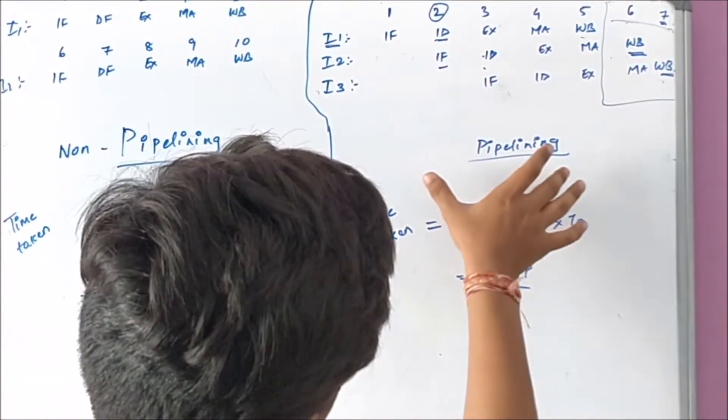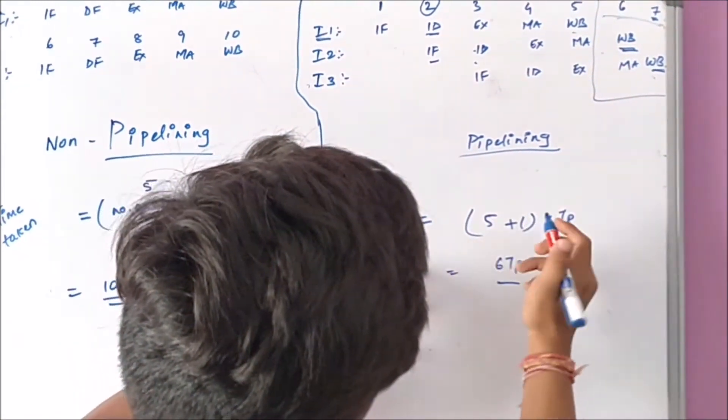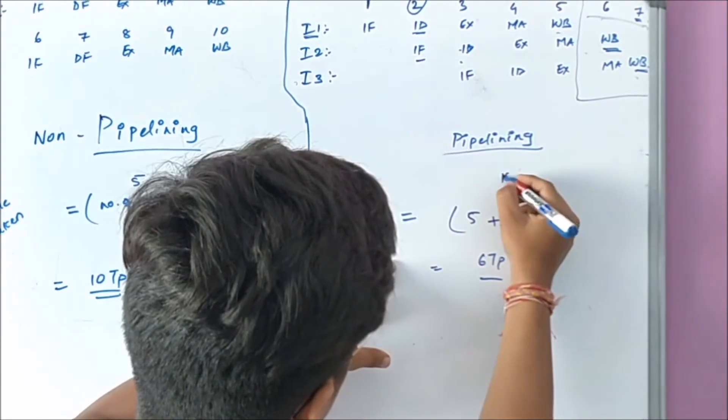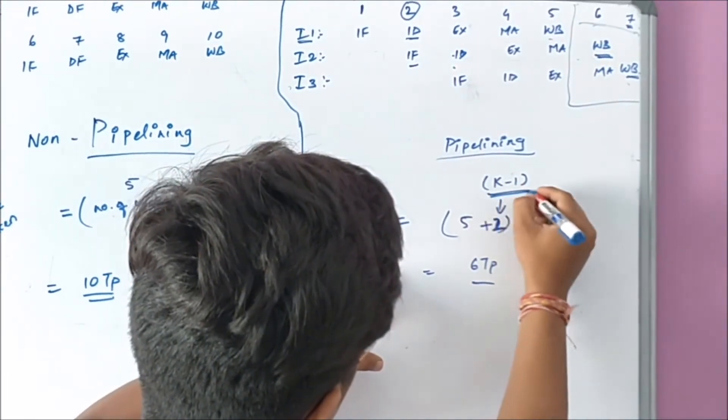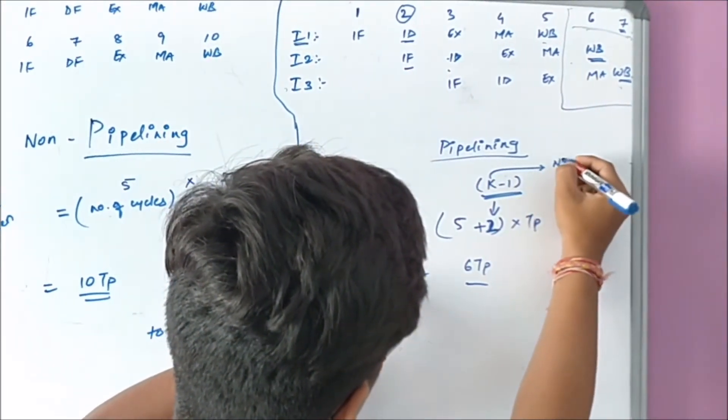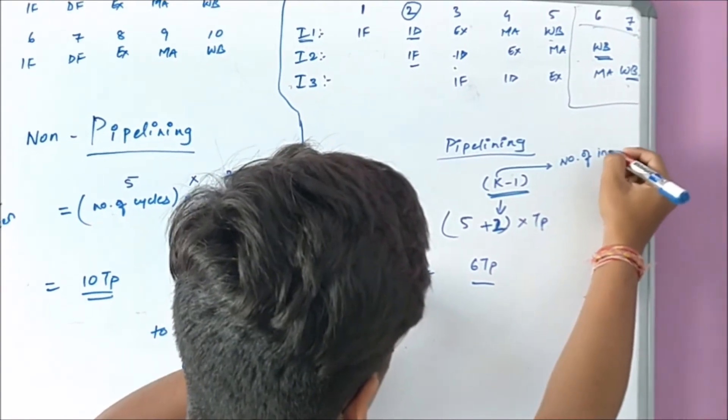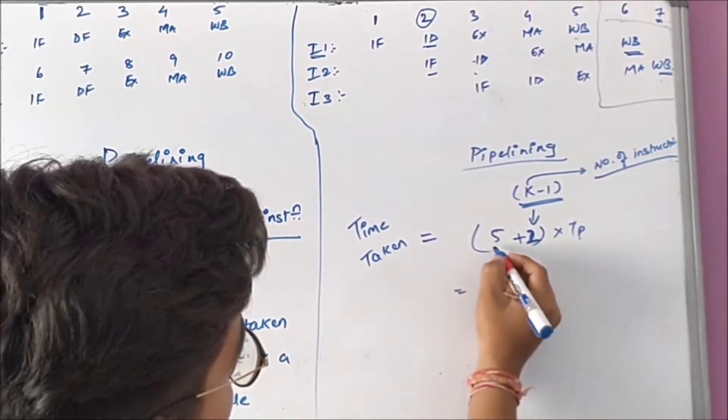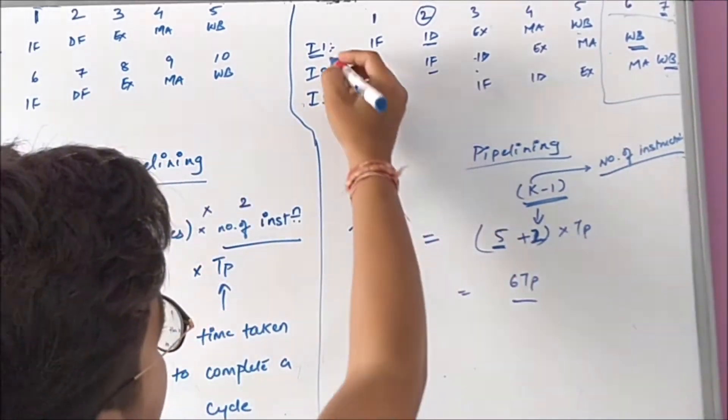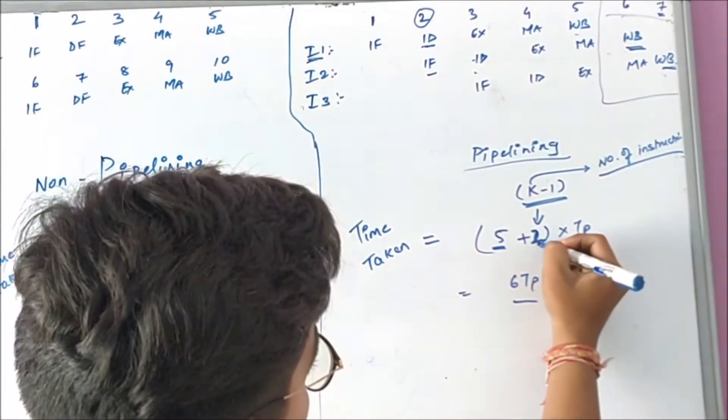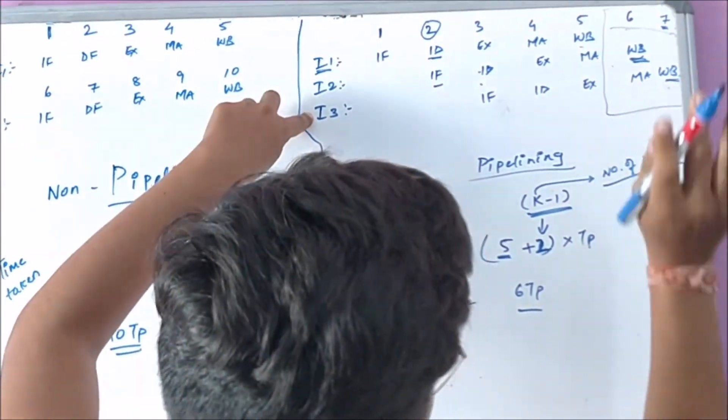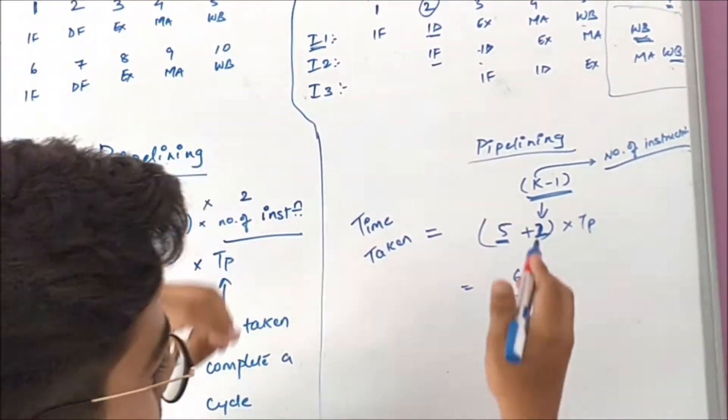The time taken by pipelining will be five plus two. Why is this two? Because number of instructions is K minus one. This is number of cycles. And this five cycles is of I1, and this two cycles is of I2 and I3, which it takes at six and seven.